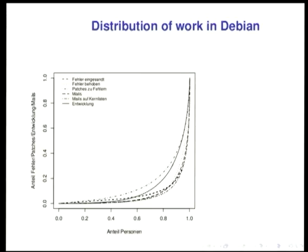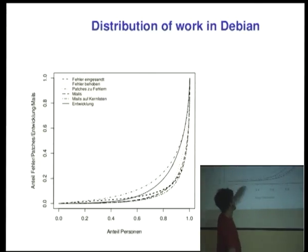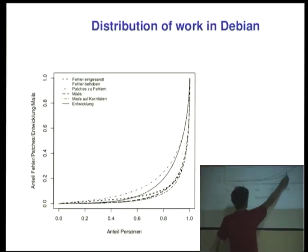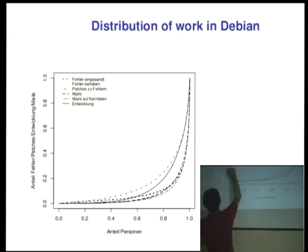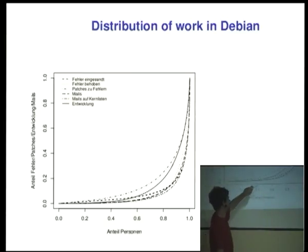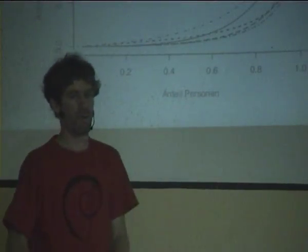These are so-called Lorenz curves — the legend is in German but I will explain. For different kinds of work you can see how it's distributed. The black line is development and package work: 80% of persons contribute those 20% of the work, and the last 20% of persons contribute the whole rest. The skewedness of the distribution is a bit different for different kinds of work, but you see that all work is quite skewed.